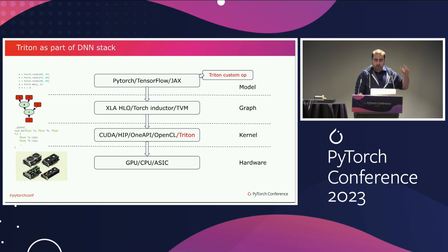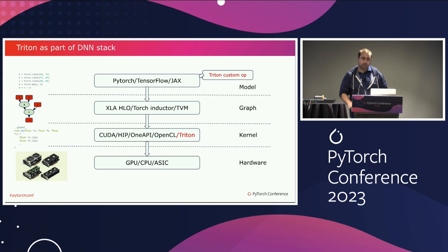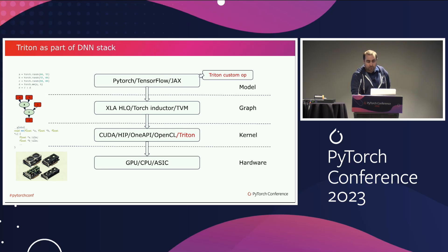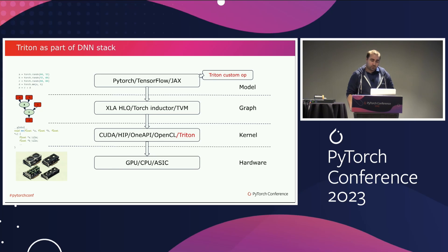Because Triton sits between the graph level and kernel implementation, it provides a very natural lowering from a graph representation and allows a simpler implementation of the graph compiler — you don't have to generate a perfect kernel in one shot; you generate the Triton code and the Triton compiler does the heavy lifting of mapping it efficiently to hardware. Triton can also be used as a custom op language to complement PyTorch when something is not implemented there.